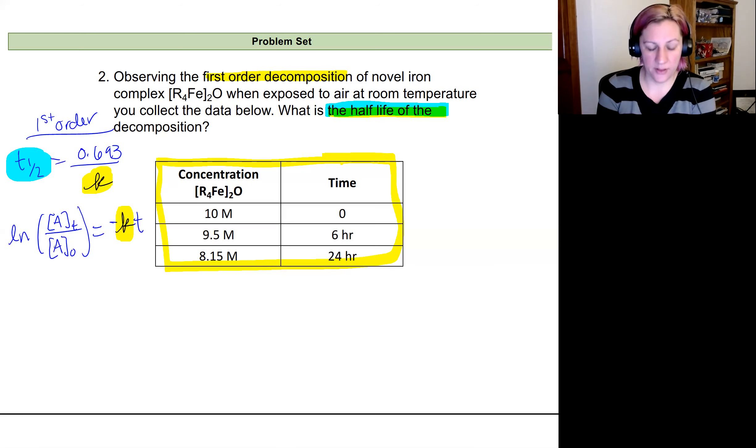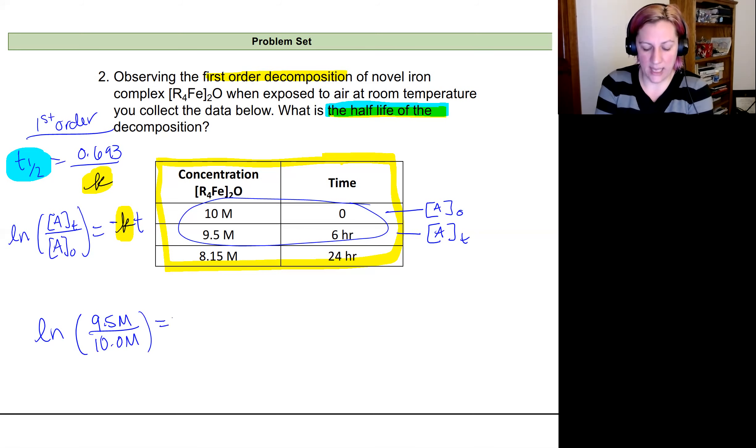So for this, I'm going to take two of my data points. I'm going to take these first initial ones right here. And so my initial concentration is going to be here at time zero and at time T, it's going to be this one after six hours. So I'll take the natural log of my 9.5 molar divided by my 10 molar. And I'll set that equal to the negative of the K. This is what I need to find. And time is six hours.